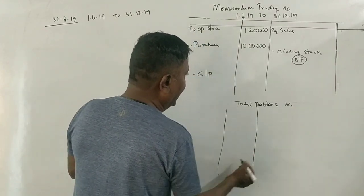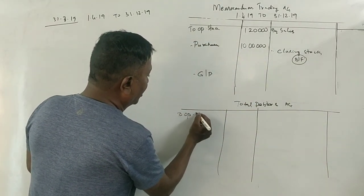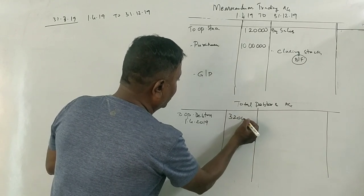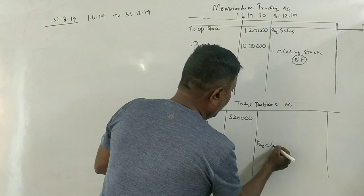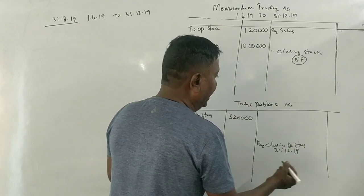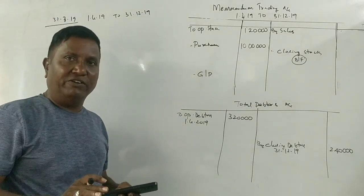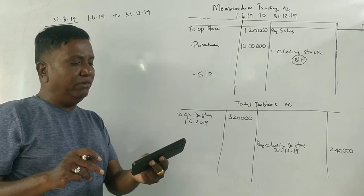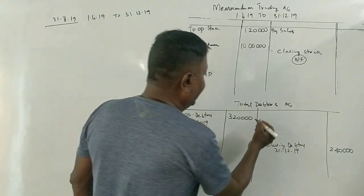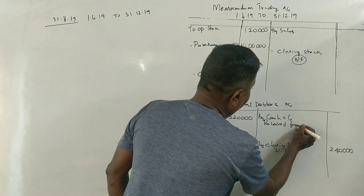The debtor is an asset, right? This is a permanent asset. The opening debtors are 3,20,000 rupees. Closing debtors on 31st December 2019 are 2,40,000 rupees. The cash received from debtors is 11,52,000 rupees.